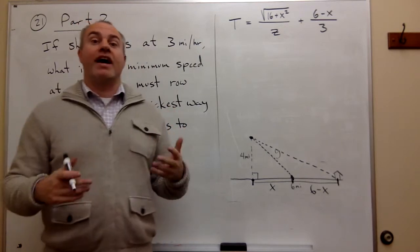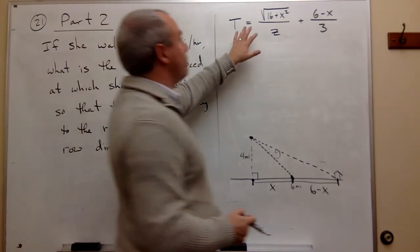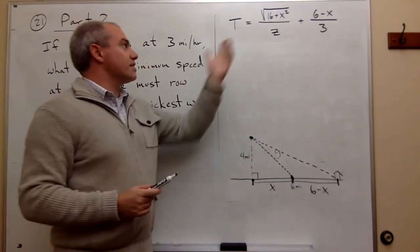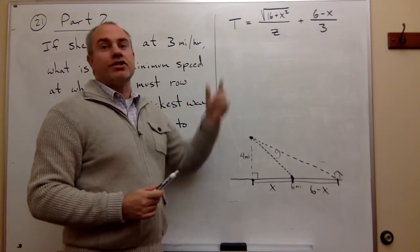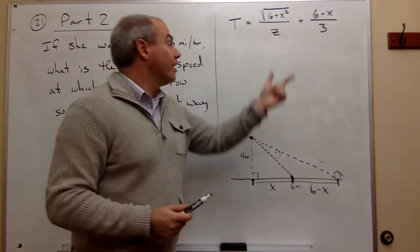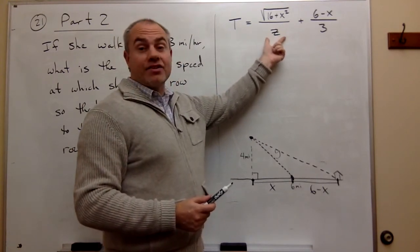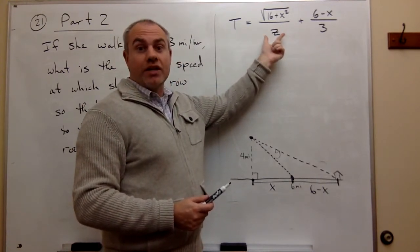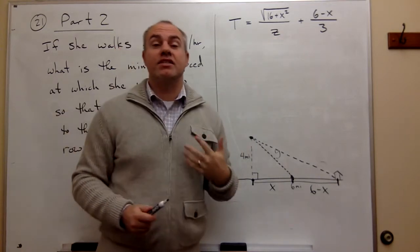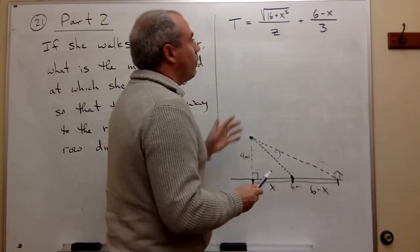So what I've done is I've set up the equation for t again, and notice that this is exactly like the equation for t was before, with one exception: we don't know anymore how fast she rows. So I just put a variable in there, we call it z, and so z is the speed at which she rows.